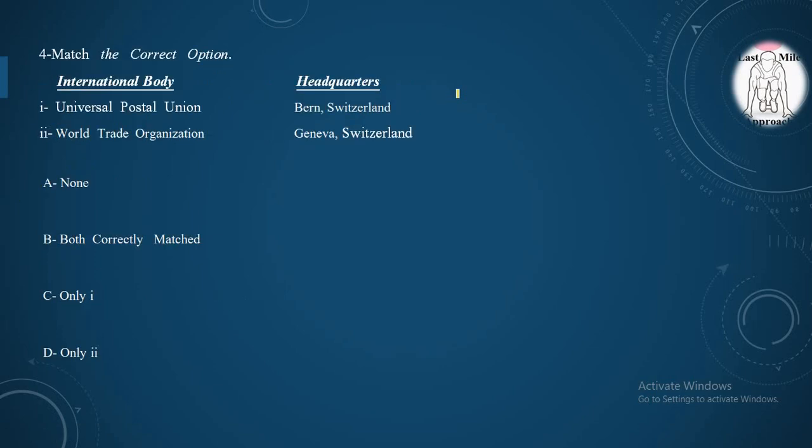Moving to our fourth question, we have to match the correct option. One side international body is given, on the other side its headquarters has been mentioned. First, Universal Postal Union is located in Bern, Switzerland. Yes, it is correctly matched. Second, World Trade Organization is located in Geneva, Switzerland. Yes, second is also correctly matched. So option B, both institutions are correctly matched. Option B is correct.